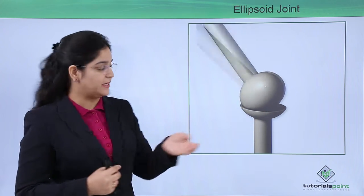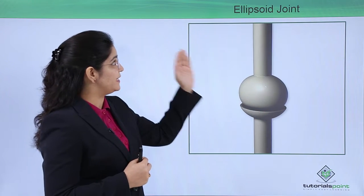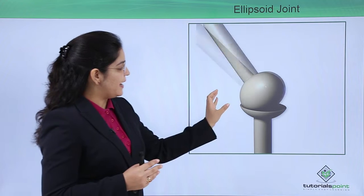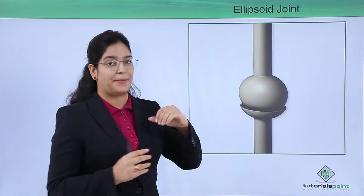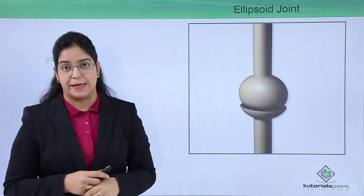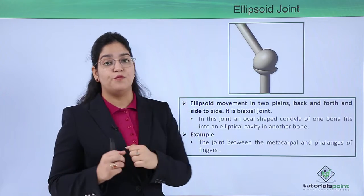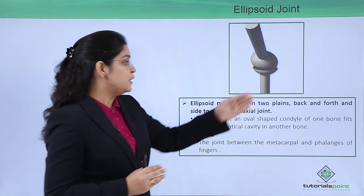an elliptical cavity. Here is an elliptical cavity, that is why it is called an ellipsoid joint. A condyle, a ball-shaped structure, is moving. Now let's learn about this ellipsoid movement, which is in two planes: back